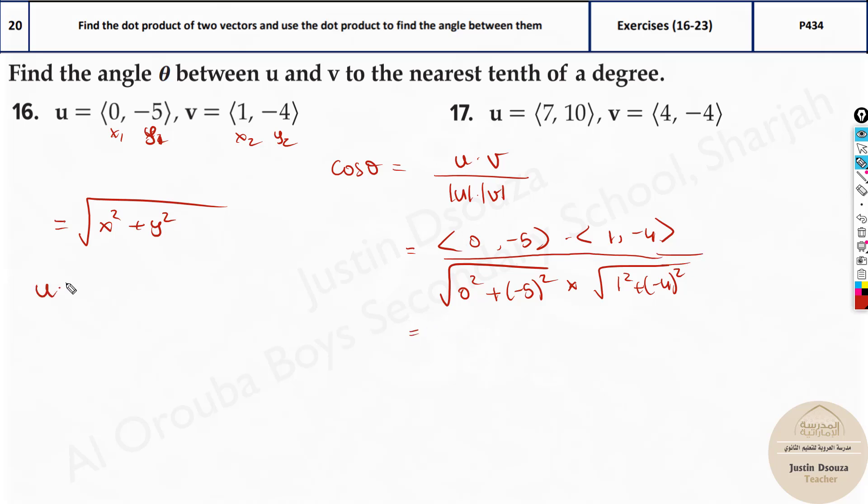Now how do we do the dot product? It will be x1 times x2 plus y1 times y2. That means the first term with the first term. 0 times 1 over here. Multiply it. Plus negative 5 times minus 4.